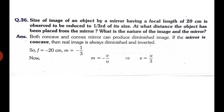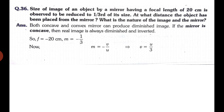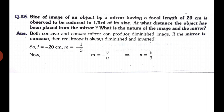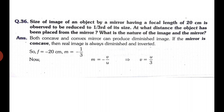This is a two-case question. Case 1: assume it is a concave mirror. The image is real and inverted, so magnification is minus 1/3, and focal length is minus 20 cm. Use the magnification formula: minus 1/3 equals minus v upon u, so v equals u/3. Substitute into the mirror formula 1 by f equal to 1 by v plus 1 by u: 1 by minus 20 equals 3 by u plus 1 by u equals 4 by u. Solving, u equals minus 80 cm. The image is real and inverted.